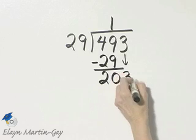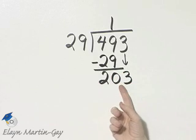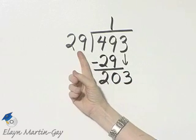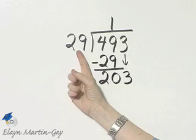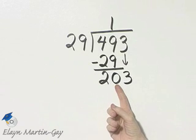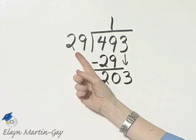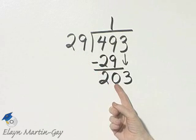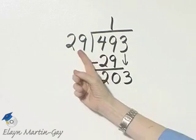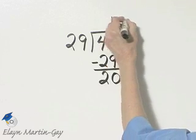Bring down the 3. Now how many 29s in 203? Let's estimate this as 30. How many 30s are there in 203? 7 times 3 is 21, a little bit more. But since I'm rounding up, let's try 7.